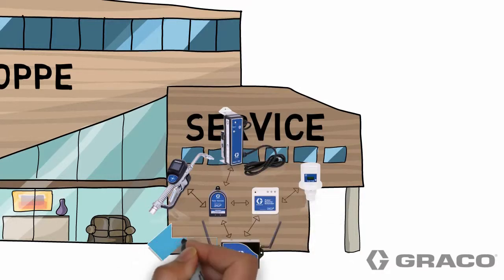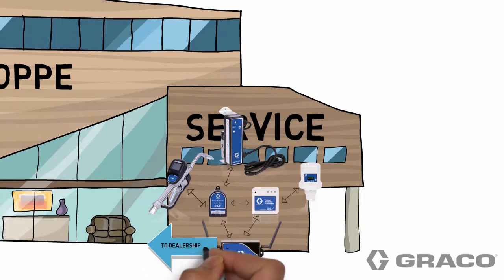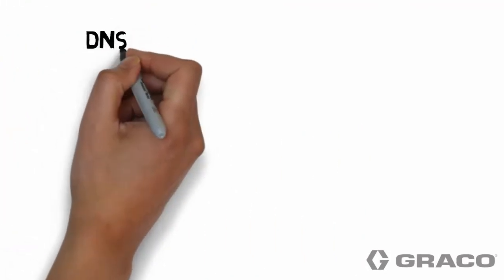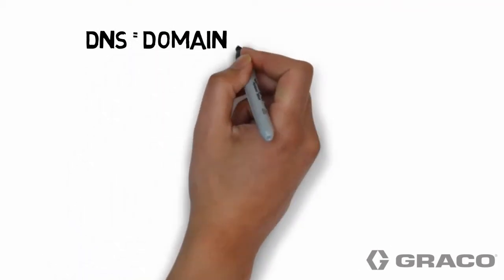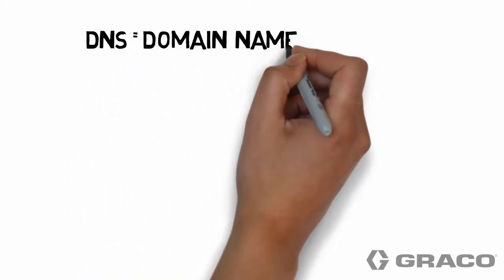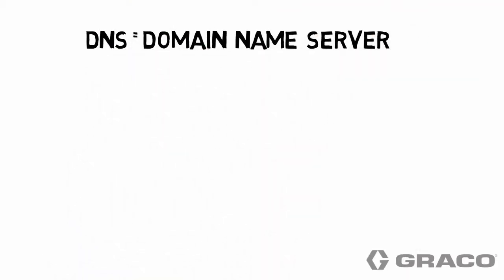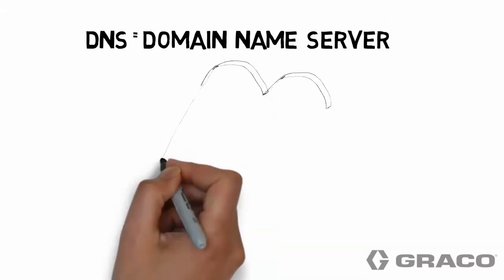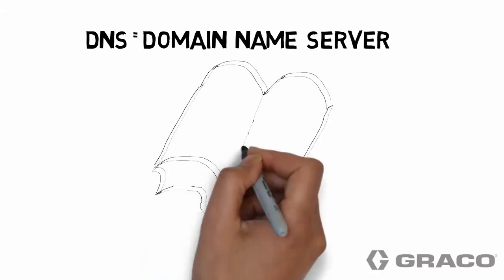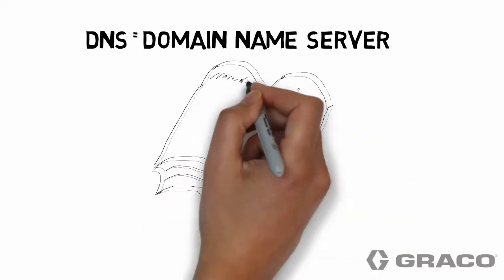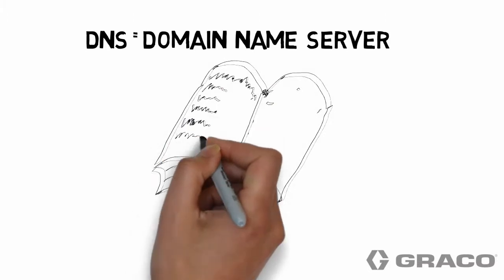And to give the signal even more oomph, a component called a remote extender is used. Together, these feed information to the hub, and thereby the dealership's LAN. A couple of acronyms revolve around addresses and protocols. The Internet uses something called a DNS, or Domain Name Server, to enable the use of words instead of numbers for Internet addresses.